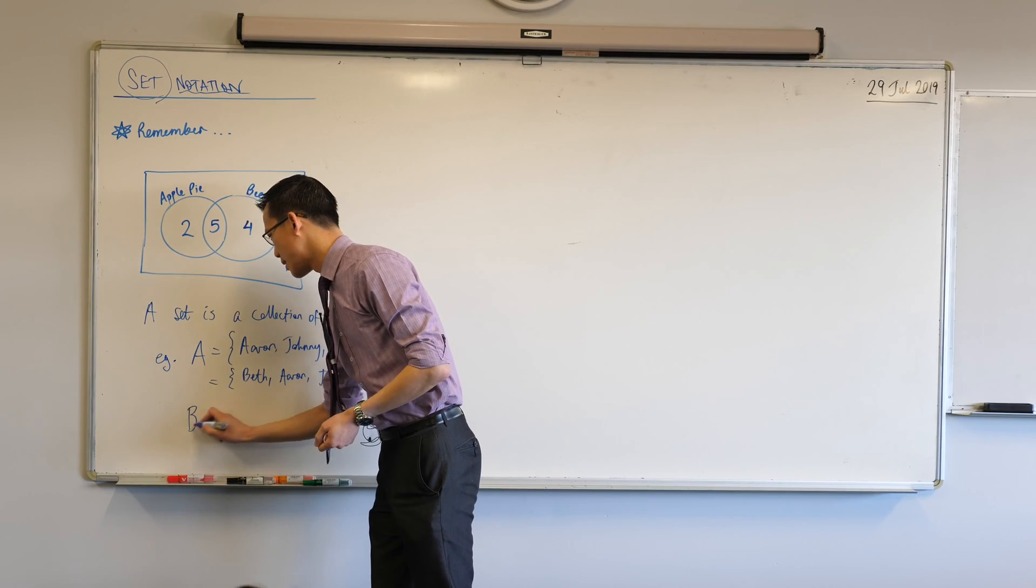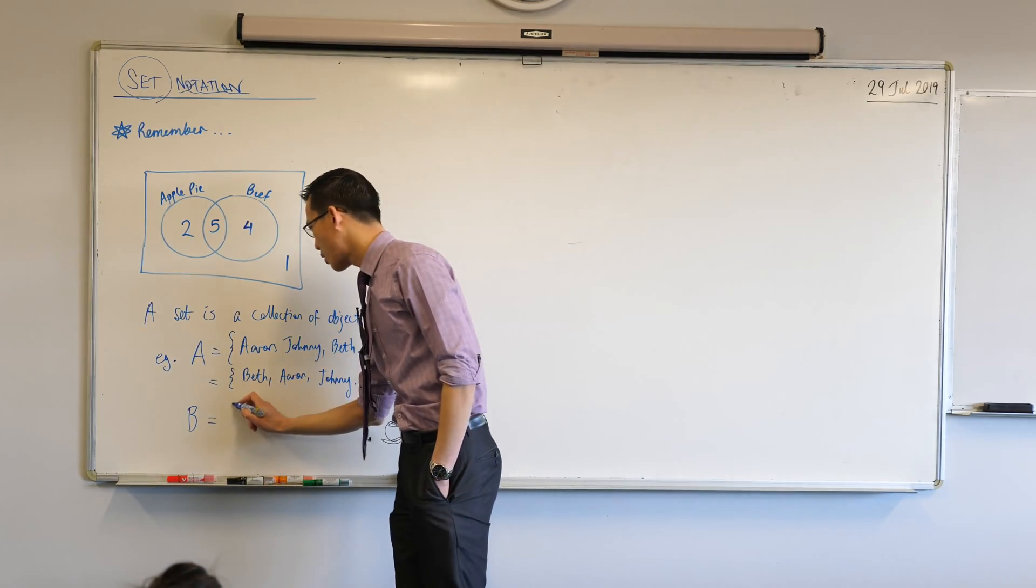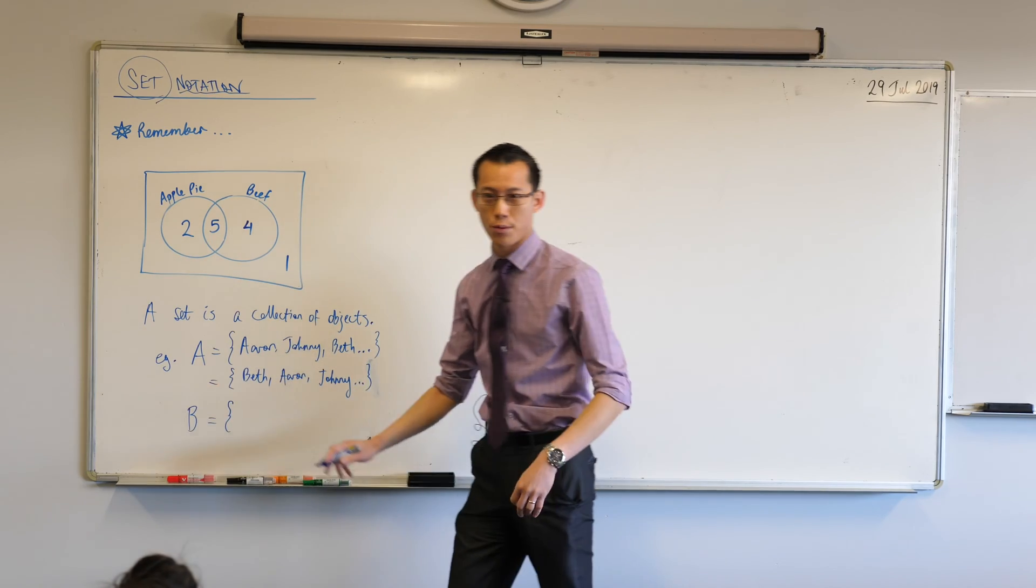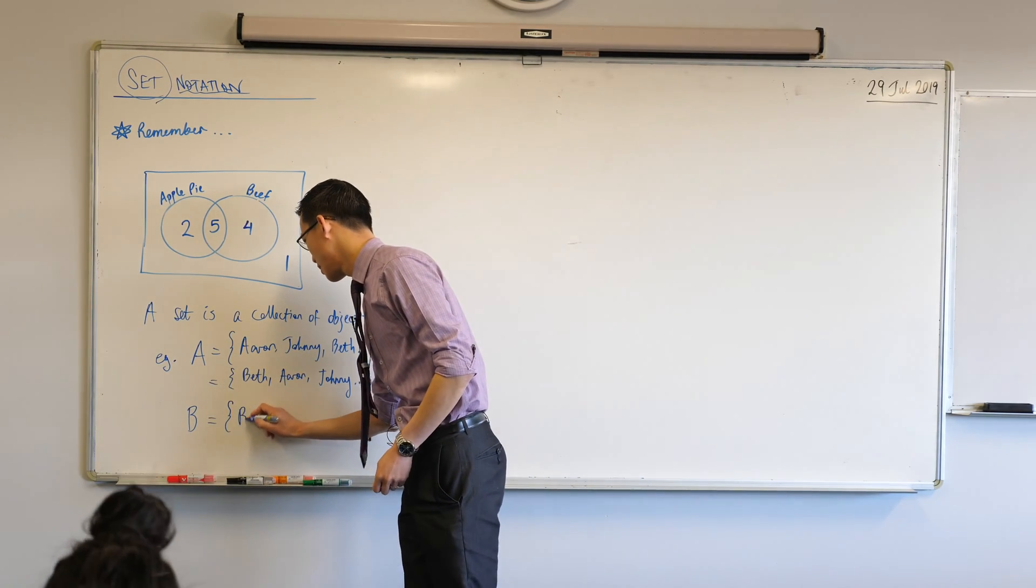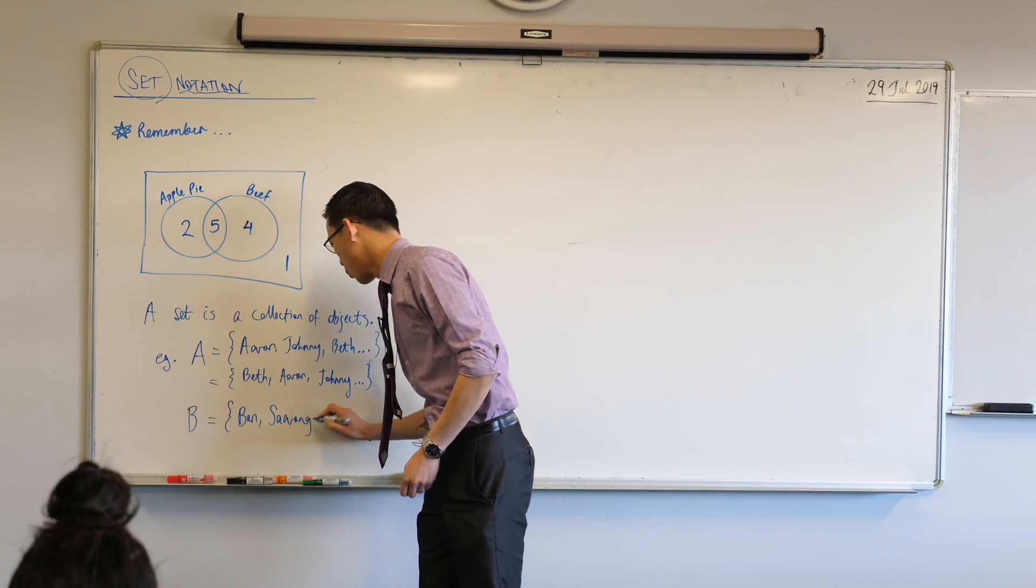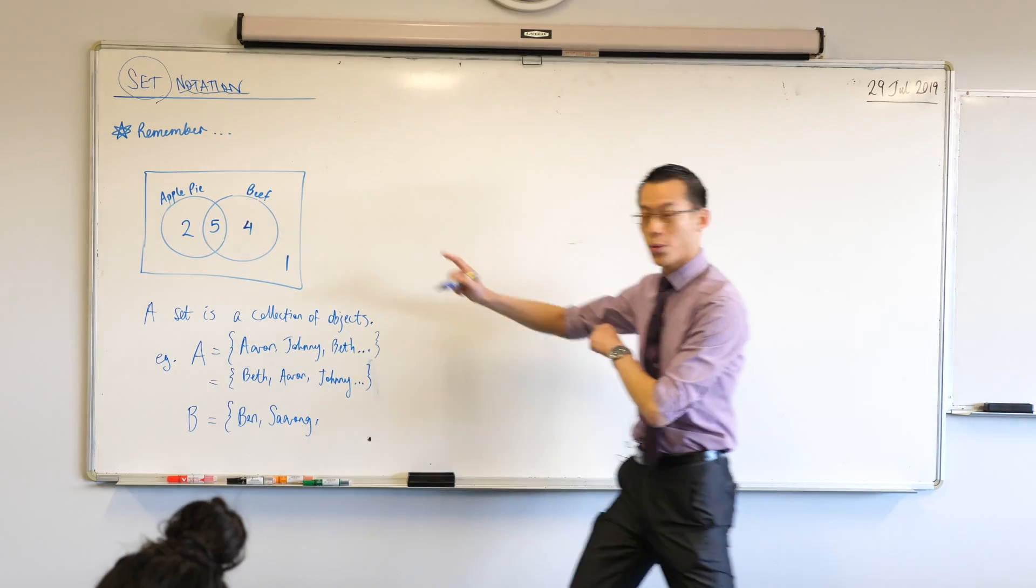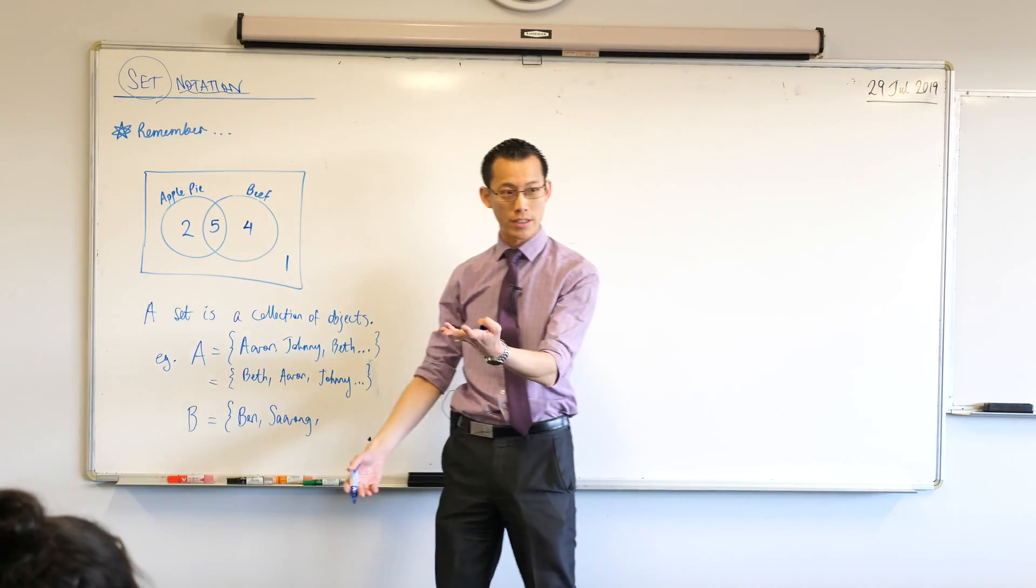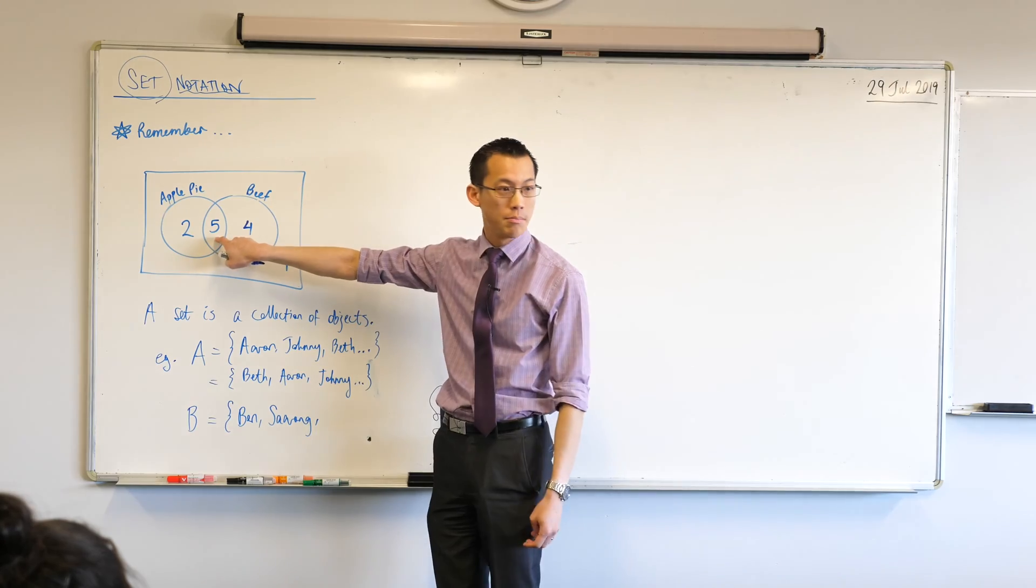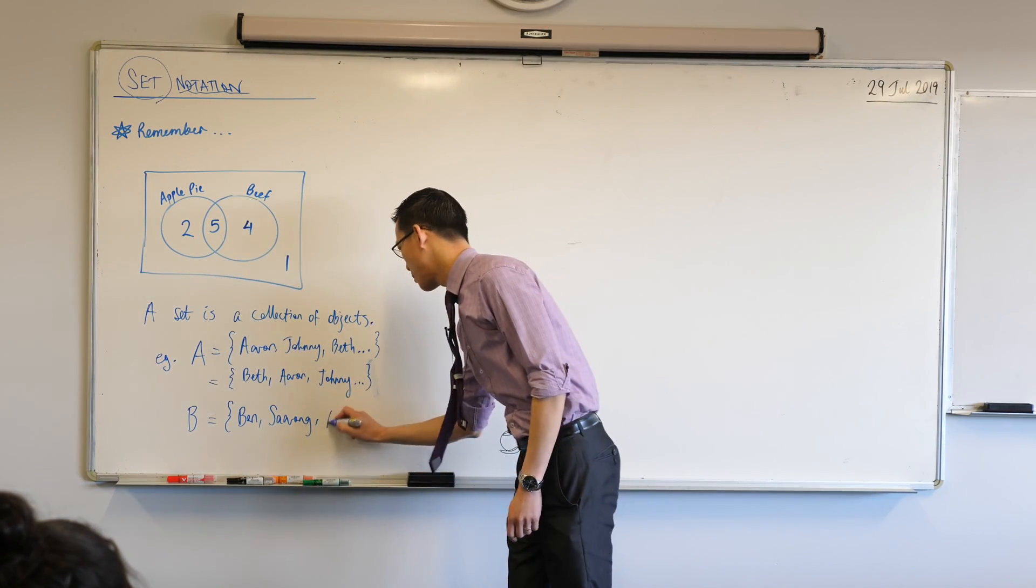If I then say I've got another set here, set B, so the people who ate B. Suppose I've got a few other people. Like, say, oh, I don't know, let's just pick some random names, shall we? So, when I start to list out all these other people, right? You might remember, when we were solving this question, what I was interested in was, for example, one of the questions was, who ate both?